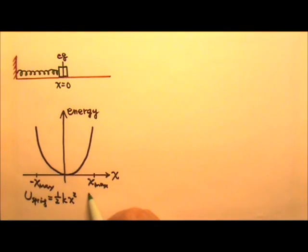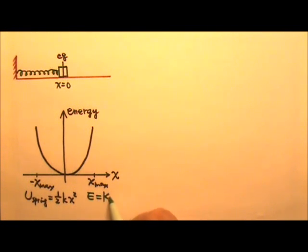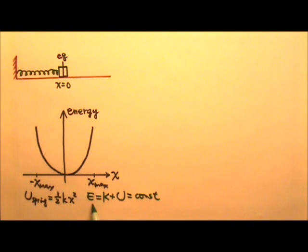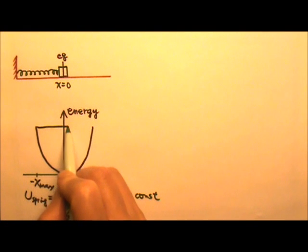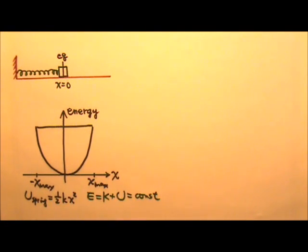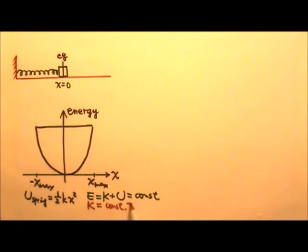As for the total mechanical energy, E equals K plus U, which is a constant. So if I plot the total mechanical energy E, it will look like a horizontal line because it stays constant. This means the kinetic energy is the constant total mechanical energy minus U.